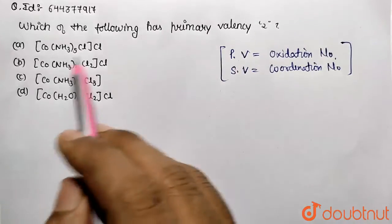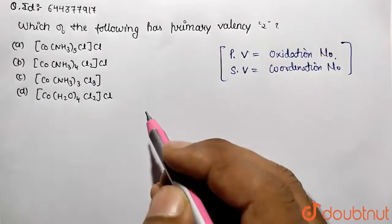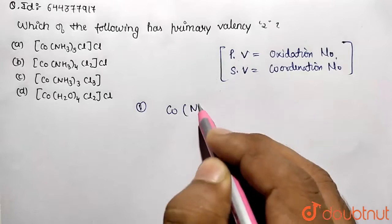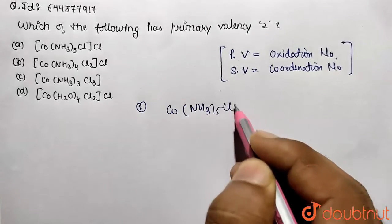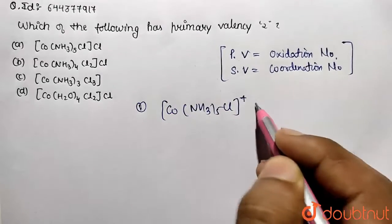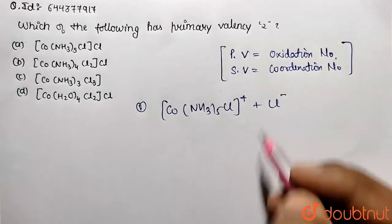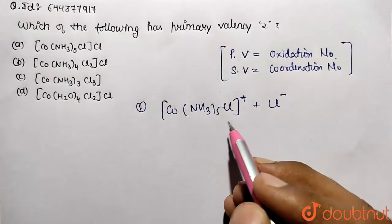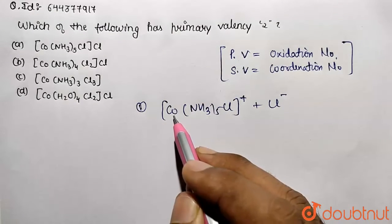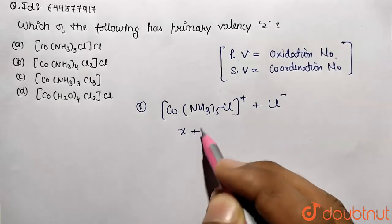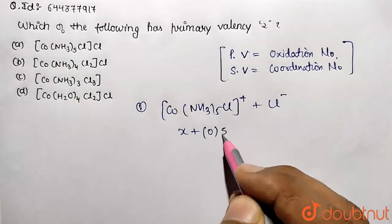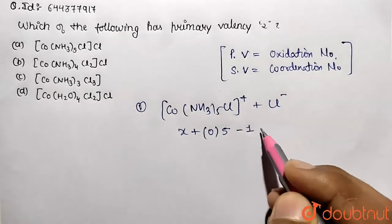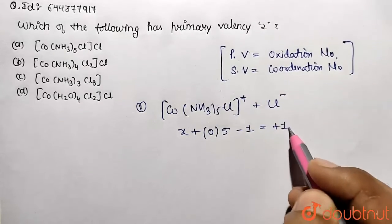Now first of all what is primary valency in the first compound. So you need to go for the ionization of compound. First I am ionizing the first compound: [Co(NH3)5Cl]. This will be correspondingly positive and Cl negative. So this is the ionization. If I want to work for the oxidation state, how I do? So X, this amine is neutral ligand, so 0 multiplied by 5. This is negative ligand, so minus 1.